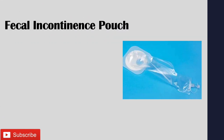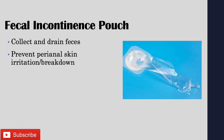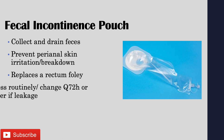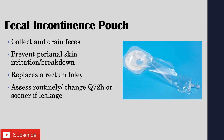A fecal incontinence pouch can be used when a patient has diarrhea to collect and drain feces. It also prevents perianal skin irritation and breakdown, and avoids the need to place a rectal catheter, which can be uncomfortable and introduce bacteria. Assess the pouch routinely and change it every three days or 72 hours, or sooner if there is leakage. For quadriplegic patients, an artificial sphincter may be used — a mechanical device with nodes placed around the anus, controlled mechanically by the patient to manage incontinence.